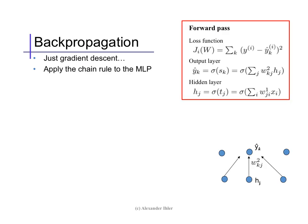The backpropagation algorithm simply applies gradient descent to the neural network cascade of weights. It's fundamentally simply an application of the chain rule of calculus over and over.